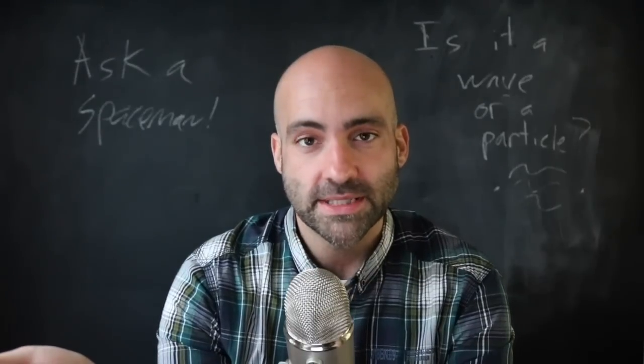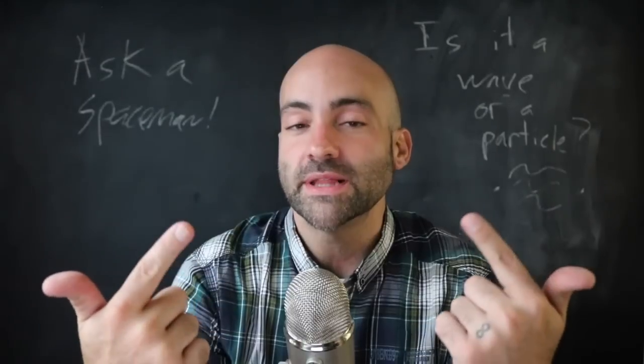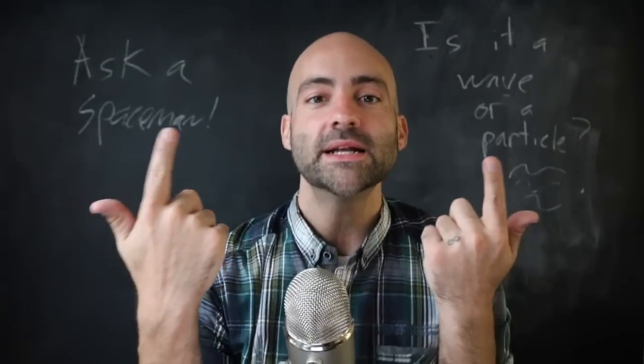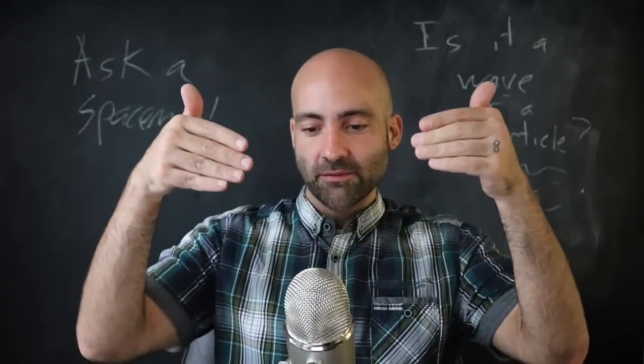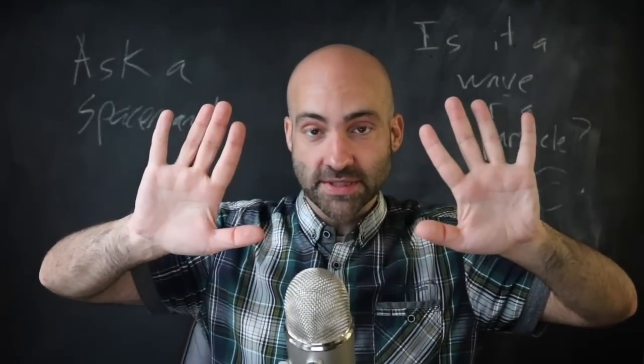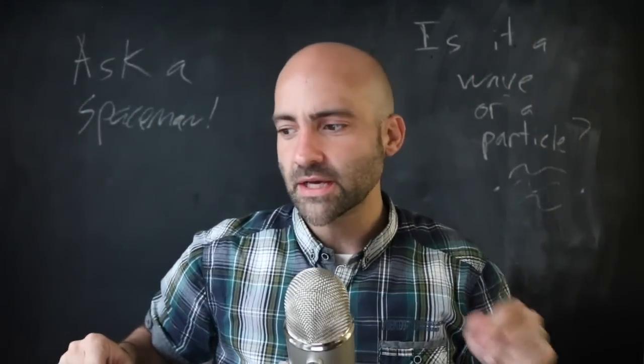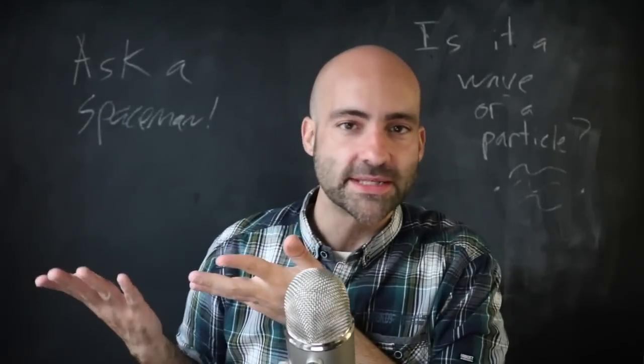But we started doing experiments with electrons. And we started replicating some experiments we had already done with light. So we had done experiments with light where there were two narrow slits and we shone light through the narrow slits and then let the light project on the screen behind it. And this was done in the early 1800s by Thomas Young. And it's called the Young's Double Slit Experiment.